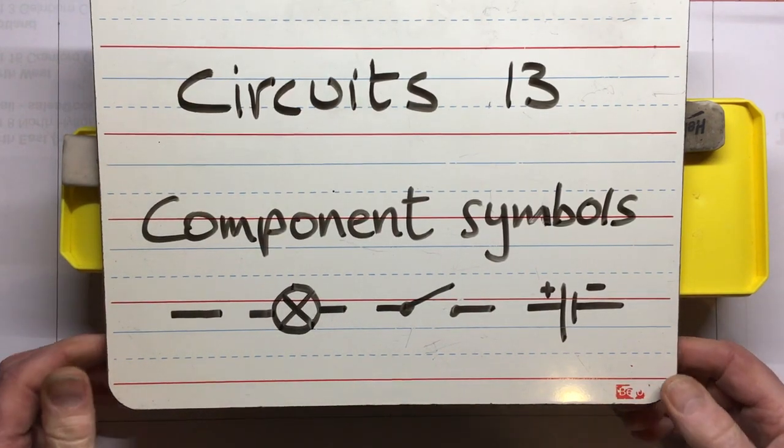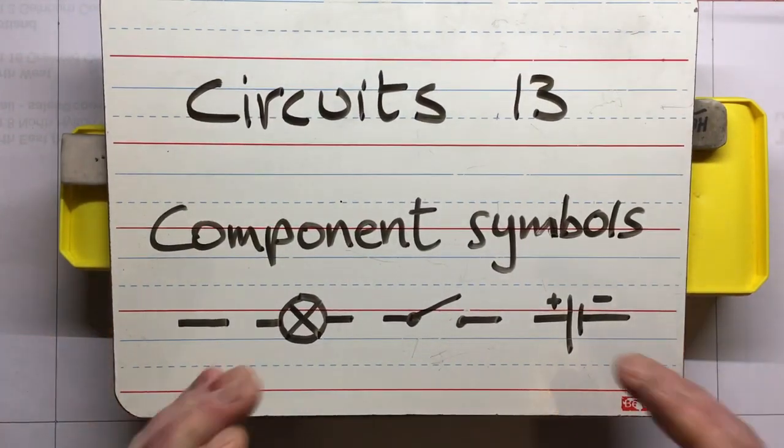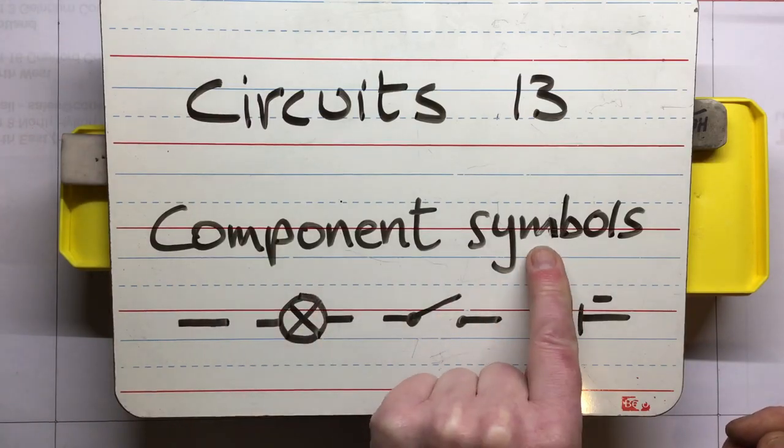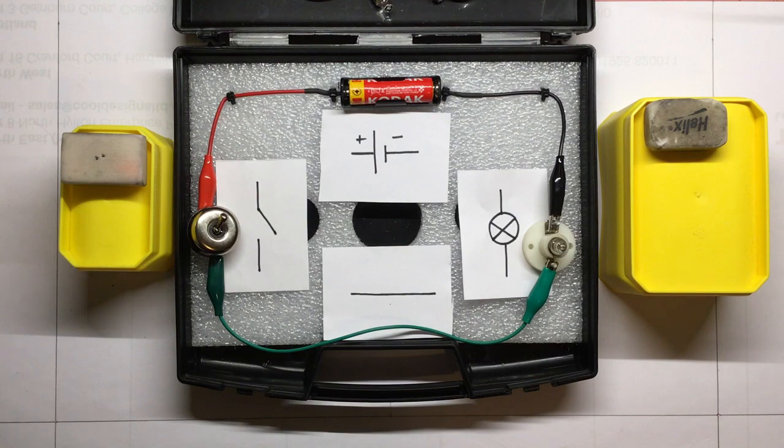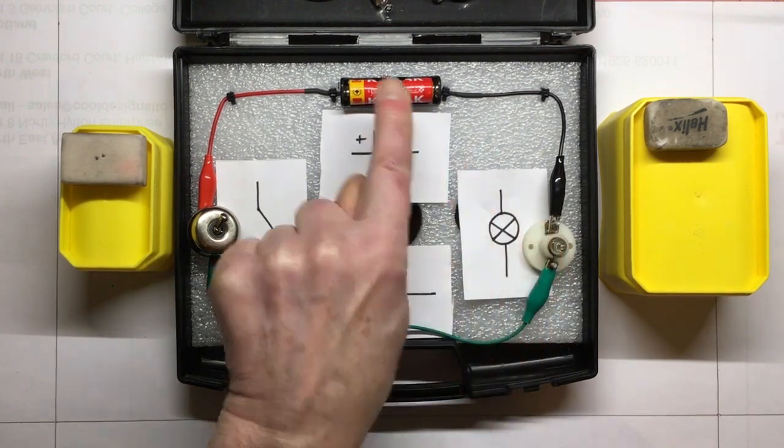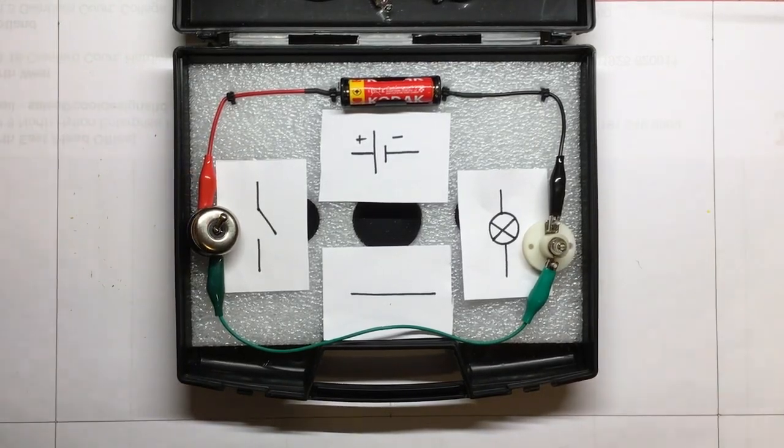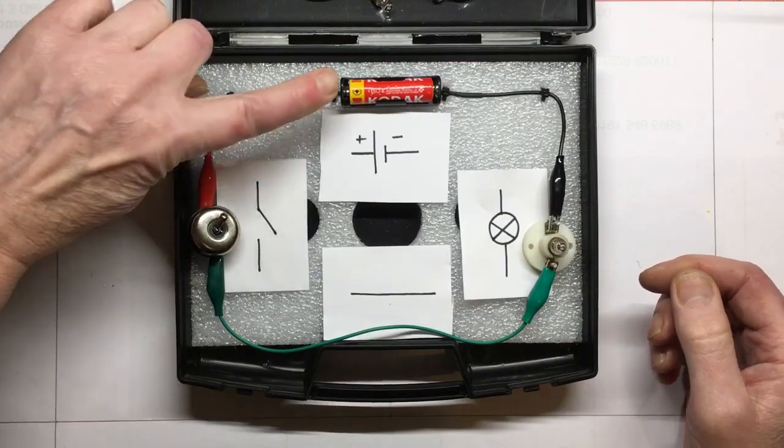There are lots of different electronic components, so it's helpful when you come to draw and design circuits to use symbols. Trying to draw a picture of a circuit with pictures of the individual parts would take far too long, so symbols have been developed to represent each of these components.